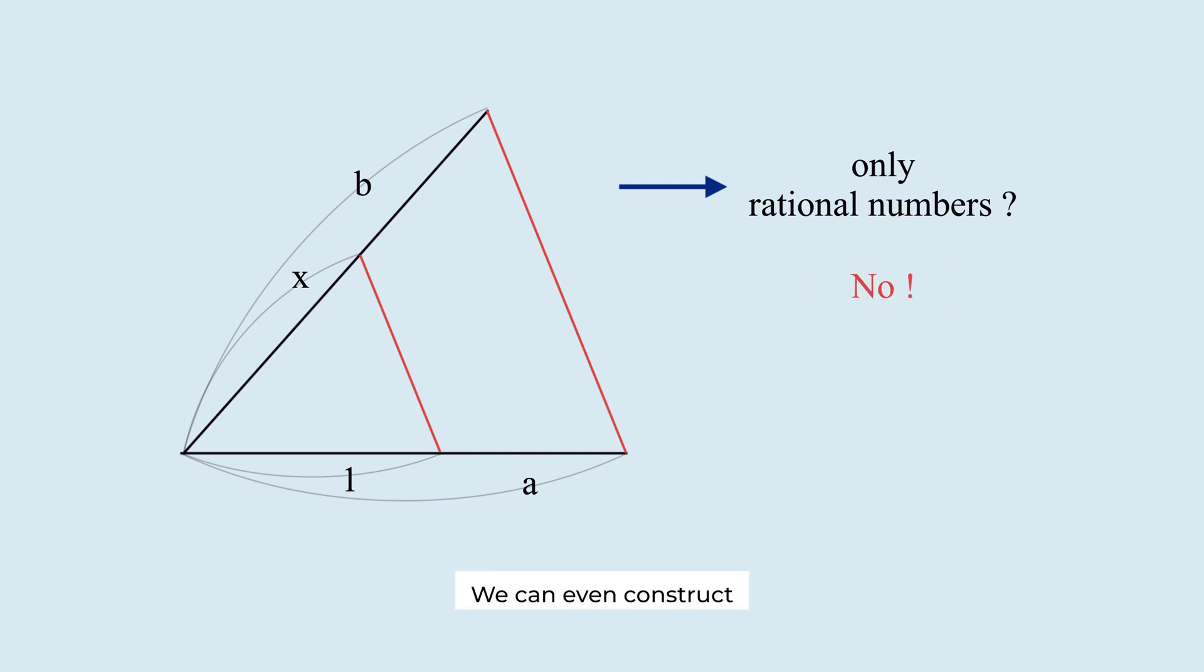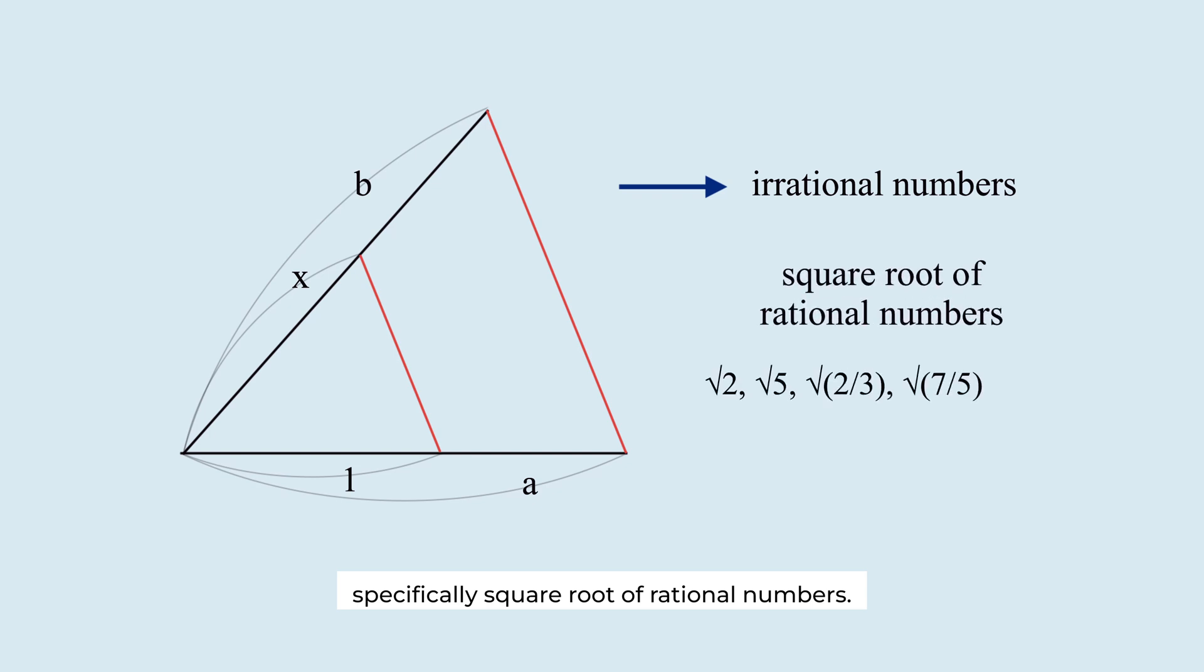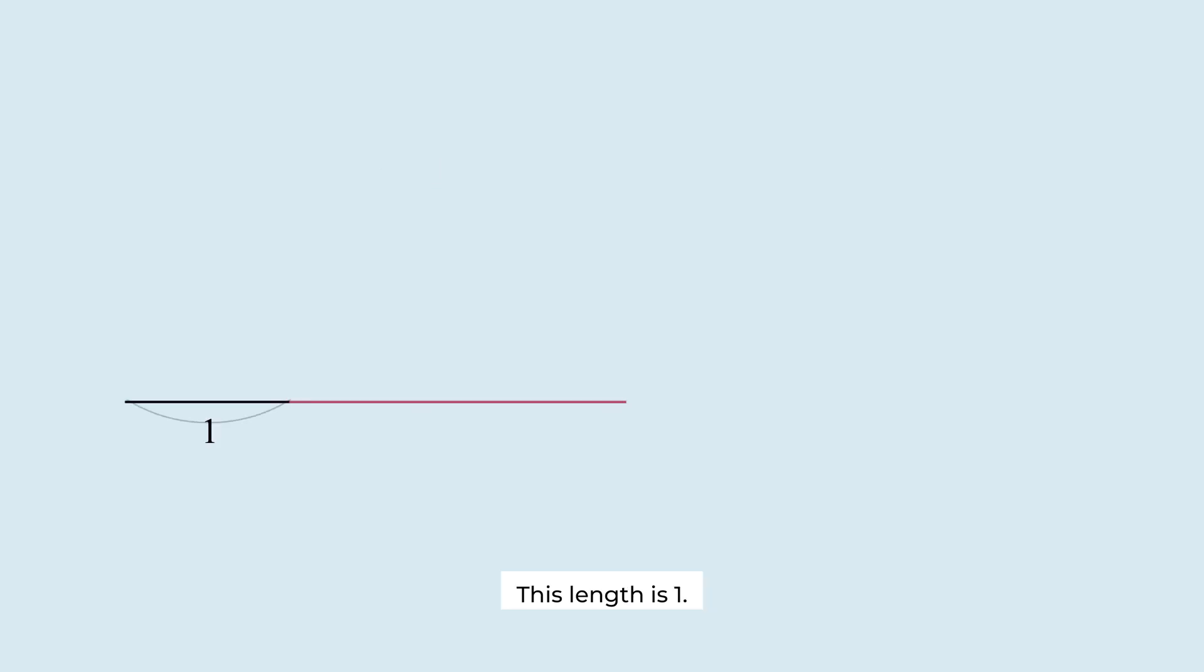No! We can even construct some irrational numbers, specifically square root of rational numbers. This length is 1. This length is x, which is rational. Add two lengths. Draw a perpendicular bisector. This length is divided in half. Draw a circle with a radius of this half length. Draw a line passing through this point. This triangle is a right triangle.